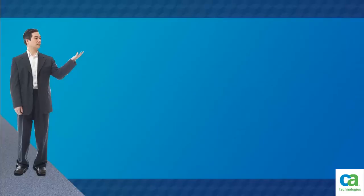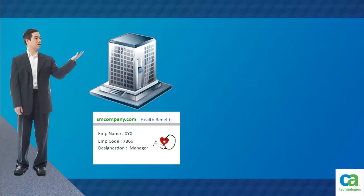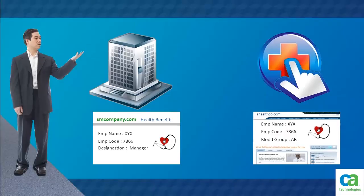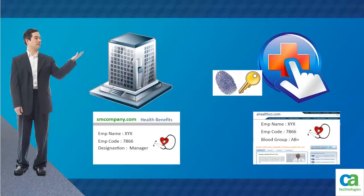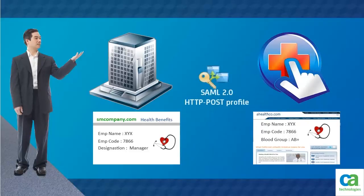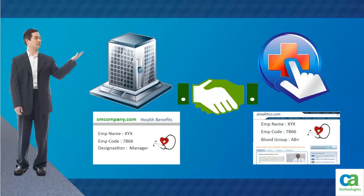In our example, smcompany.com is the identity provider and ahealthco.com is the service provider. A federated partnership has been created between the two organizations, with the identity provider creating the assertion and the service provider consuming the assertion. The partnership uses SAML 2.0 HTTP POST profile for single sign-on. This video demonstrates service provider initiated and identity provider initiated federation transactions using Secure Proxy Server as a federation gateway.